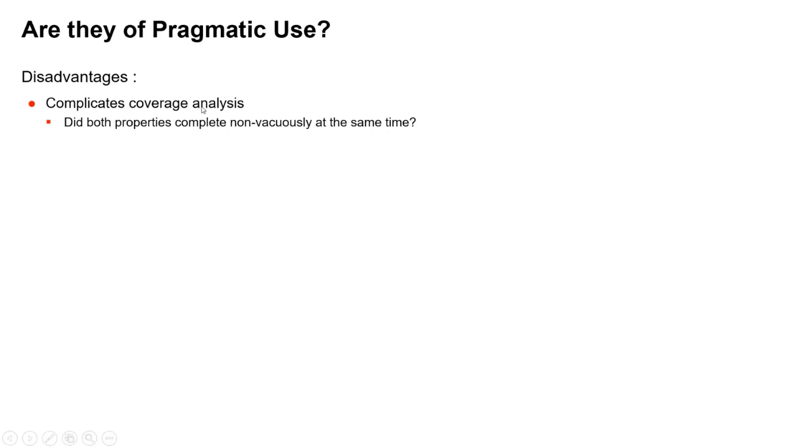The disadvantages are it complicates coverage analysis. Did each branch, each side of the AND operator, pass non-vacuously at the same time? How do I find that out without more work?